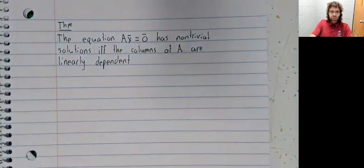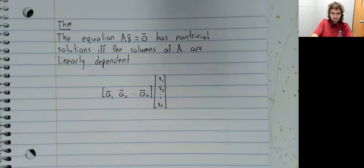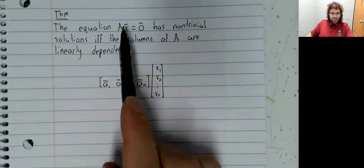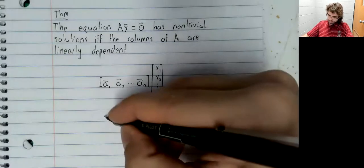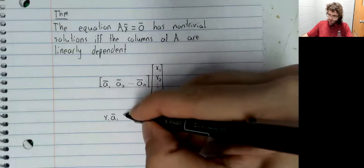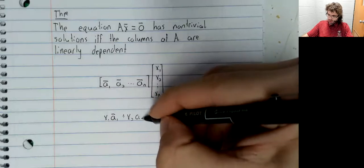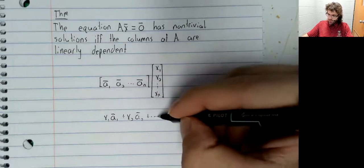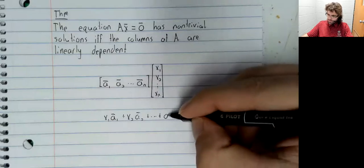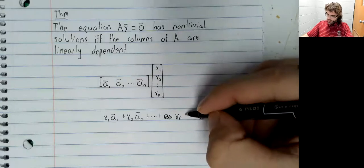Remember, if we think of A as a bunch of column vectors sitting next to each other, then Ax is a linear combination of vectors. Like so.